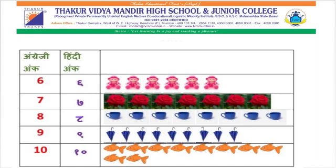English is 8, Hindi is ८ (aath). Cup — total cups कितने हैं? 1, 2, 3, 4, 5, 6, 7, 8. तो हमारे 8 cup होंगे।